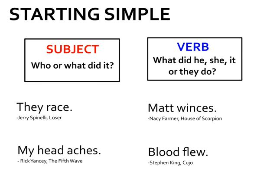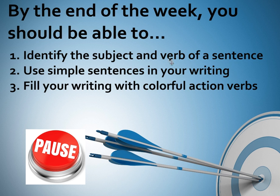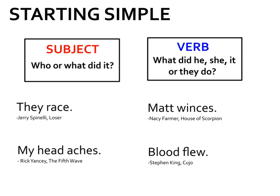Let's get started with this first goal: identify the subject and verb of a sentence. A subject is going to be a noun — a person, place, or thing — that answers the question: who or what did it? A verb is going to answer the question: what did he, she, it, or they do?